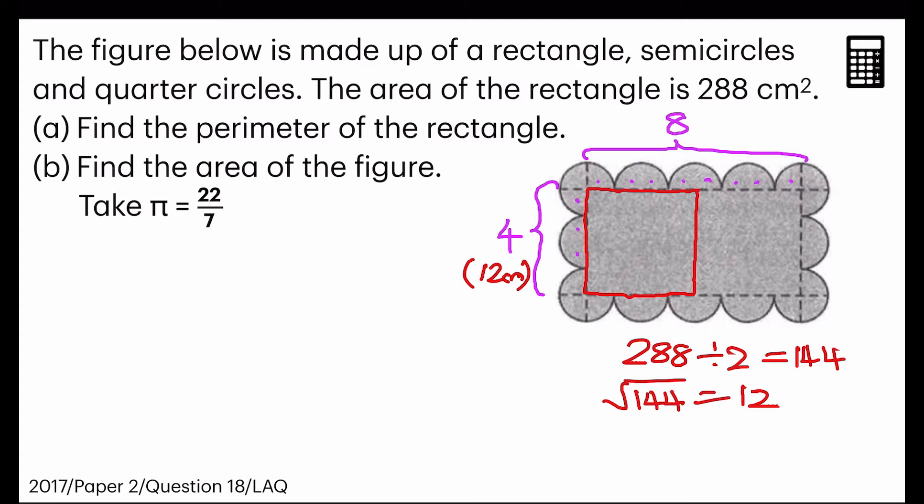And on the other side would be 12 times 2 equals to 24. 24 centimeters. So to find the parameter of the rectangle, I would just have to add 12, 24, another 12, and another 24. So 12 times 2 plus 24 times 2 giving me 72. So the first part of the question, the answer is 72 centimeters.